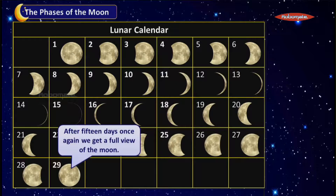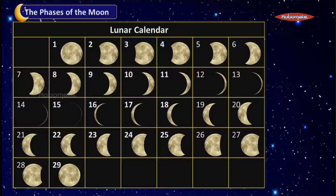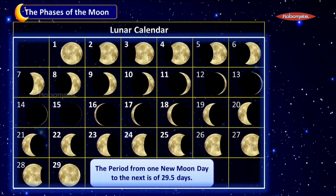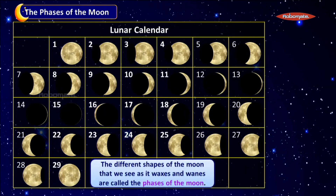This cycle takes approximately more than 29 days, which is why it equals one month. The time period from one full moon day to the next full moon is one month. The period from one new moon day to the next new moon day is 29.5 days. The definition of phases of the Moon is: the different shapes of the Moon we see as it waxes and wanes.